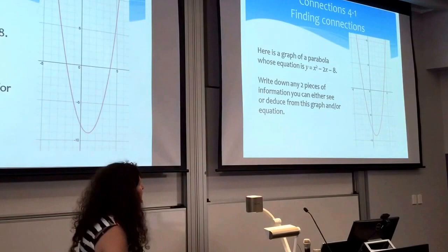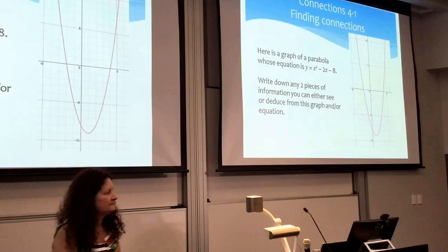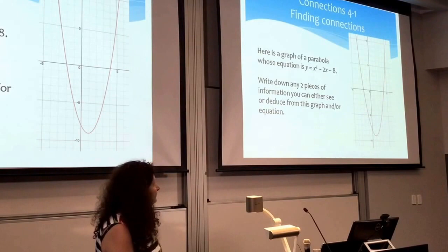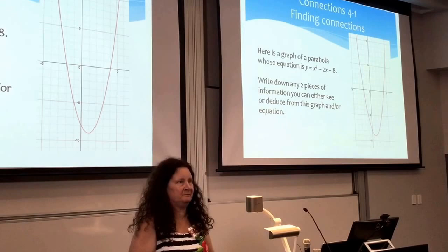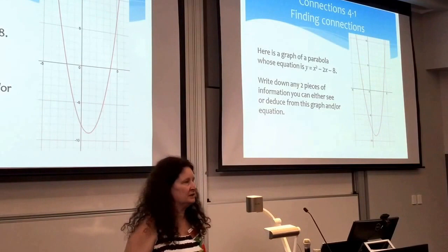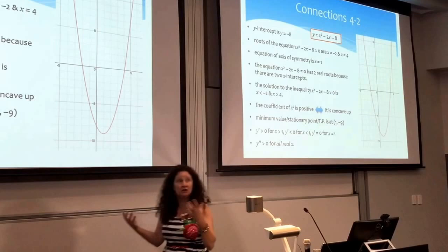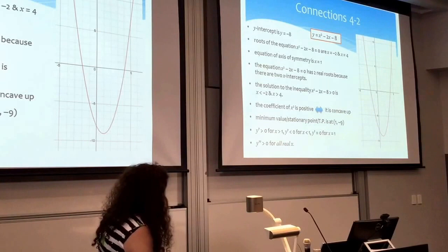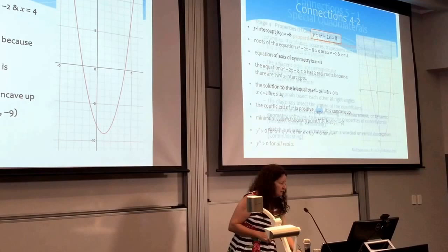Parabolas — can you write down any two things that you can either deduce or straight away see when you have a graph of a parabola or an equation of a parabola? Audience responses: minimum, positive, intercepts, vertex, concavity, symmetry, smiley face, sad face. Lots and lots of things — it's a huge area for connections looking at parabolas and quadratics. I've jotted down a few things here: some within the topic of quadratics when you're teaching it, and other things that go outside because they relate more to calculus as well.